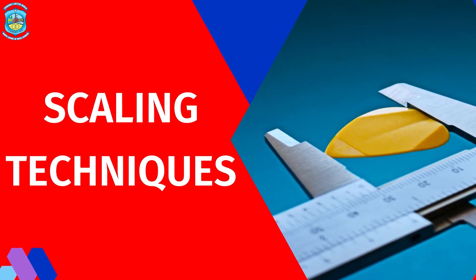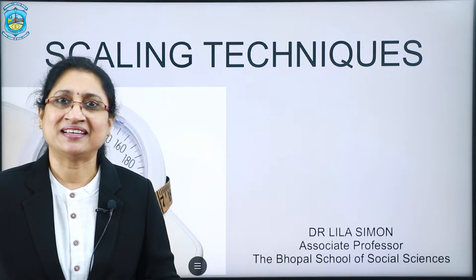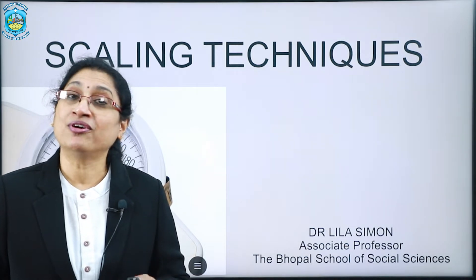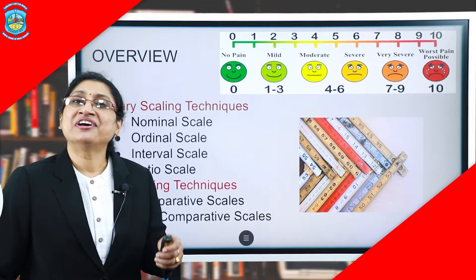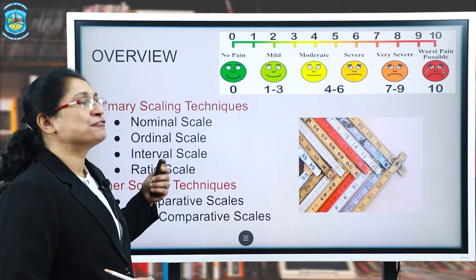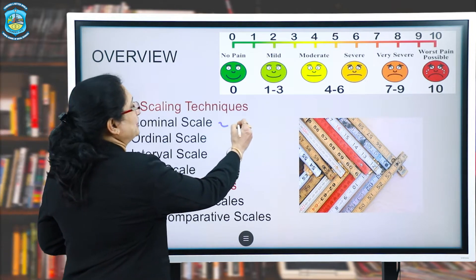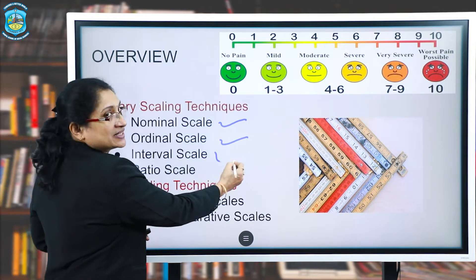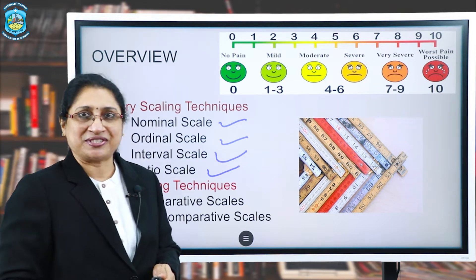As we just heard about scaling techniques, what comes to our mind are the scales and measurements. When it comes to research, we talk about four main scales: the nominal scale, the ordinal scale, the interval scale, and of course the higher-order scale, which is the ratio scale.